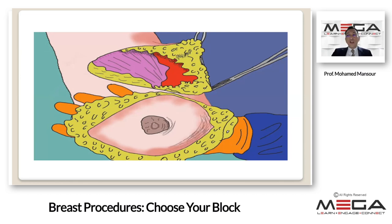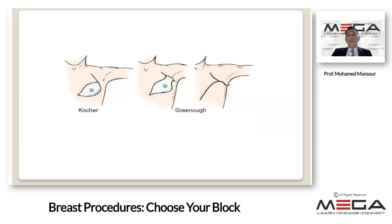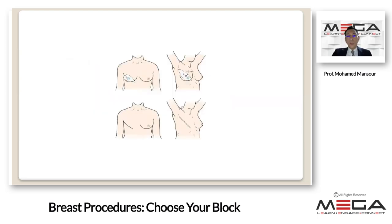Because breast surgery can be associated with significant post-operative pain, it is very important for the breast surgery anesthesiologist planning a nerve block to fully understand the planned surgery. There are a lot of incisions that can be involved during breast surgery, from a simple incision for lumpectomy to a major complicated procedure like modified radical mastectomy, radical mastectomy, or lymph node dissection.